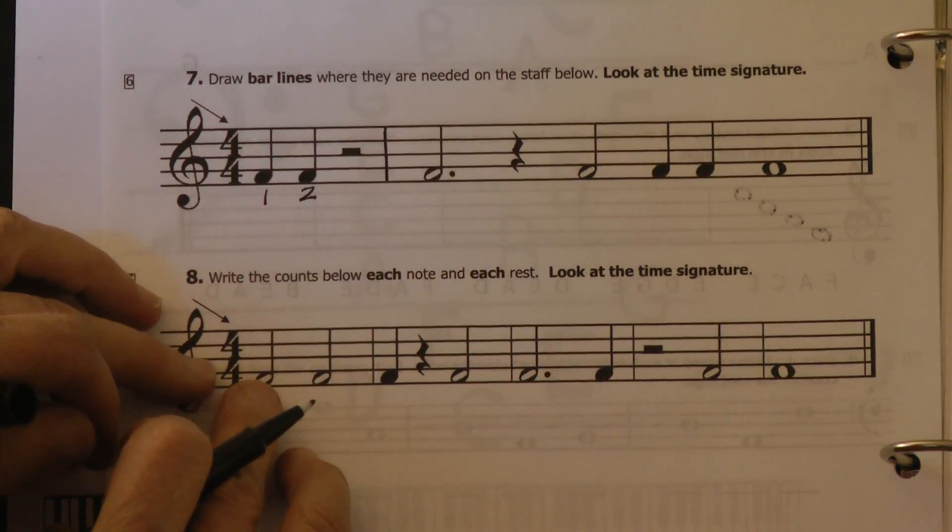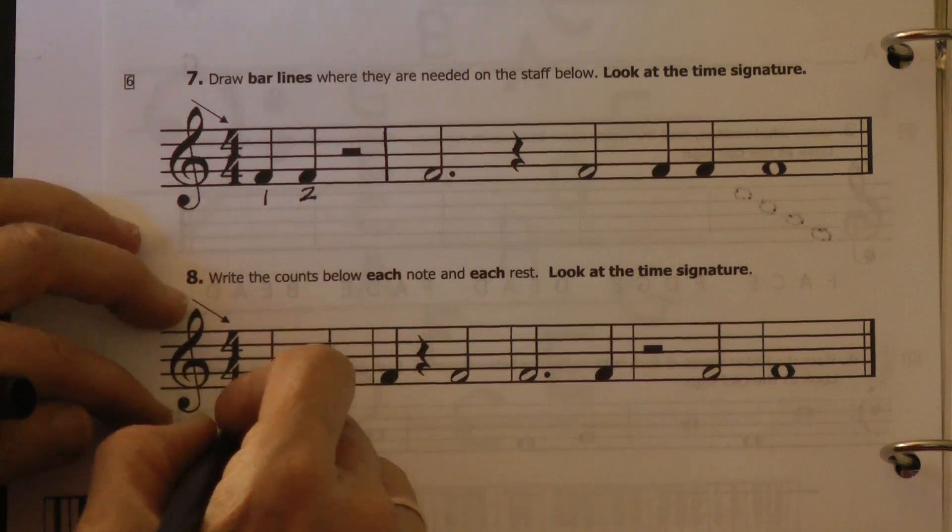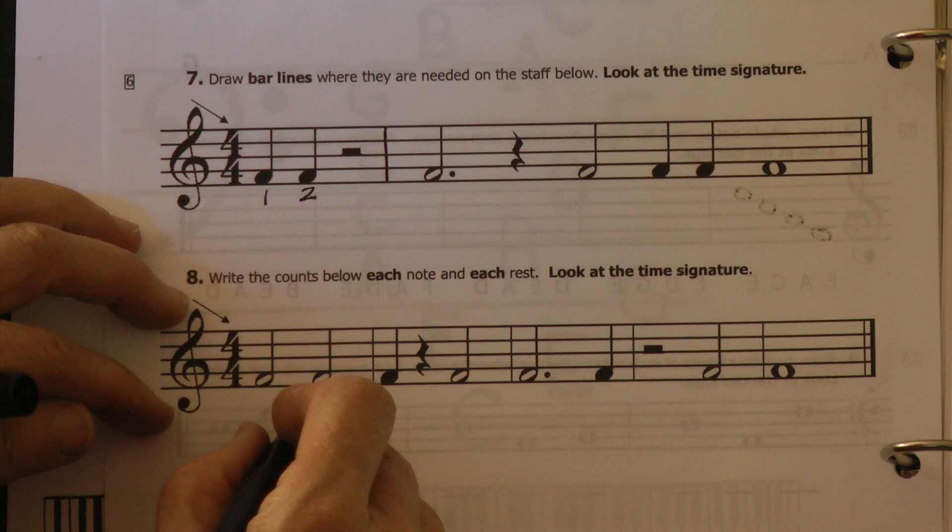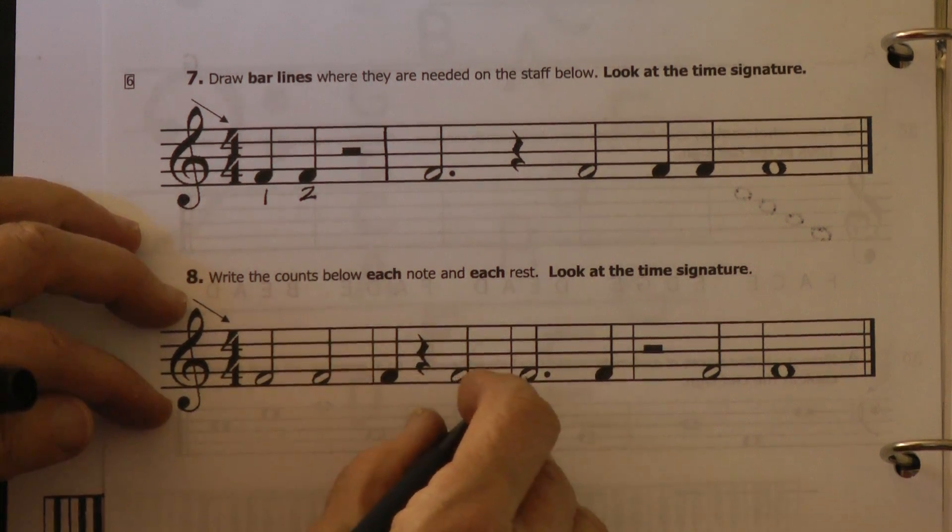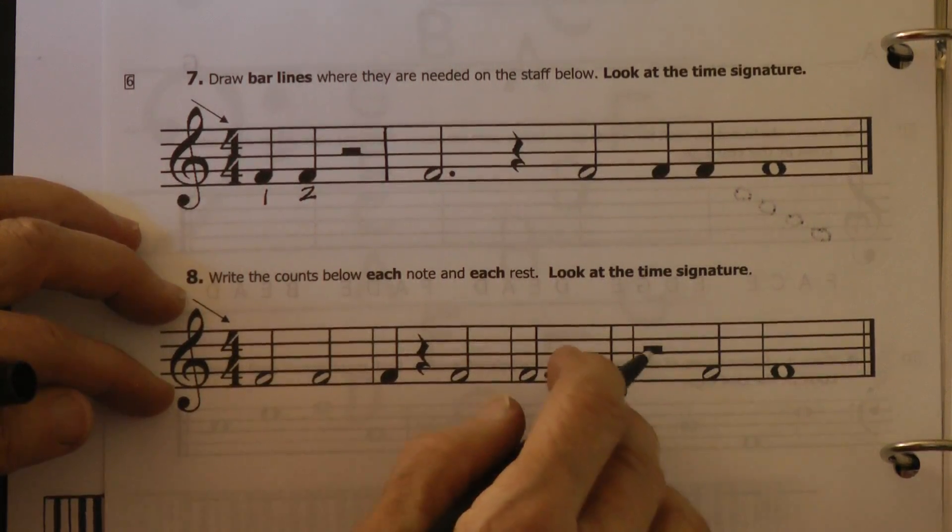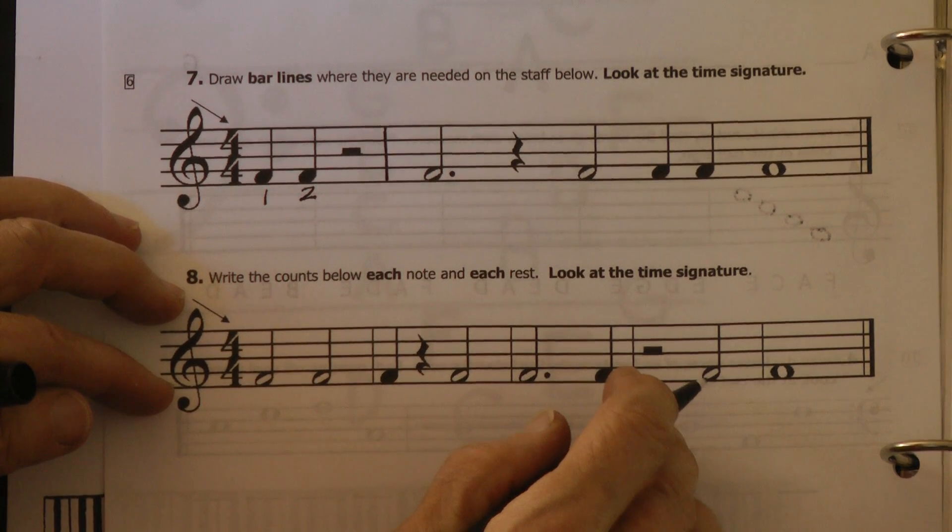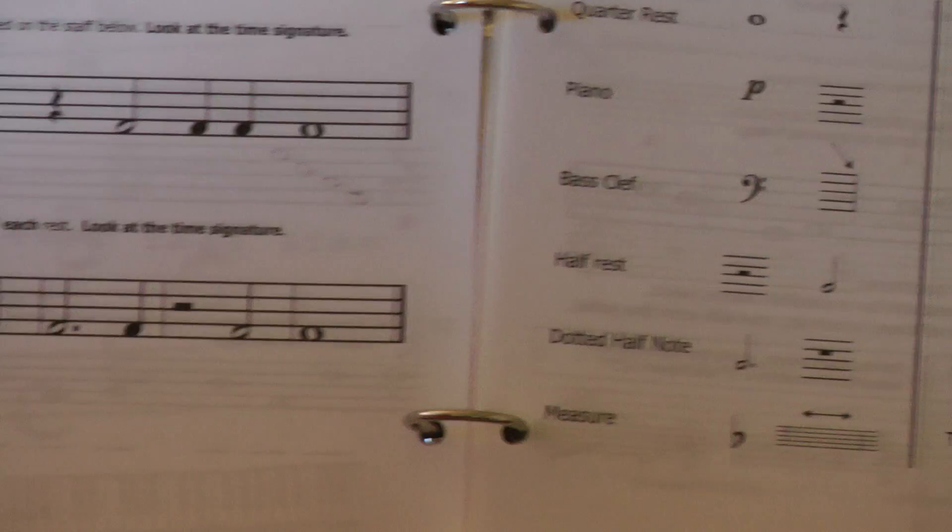Now here's where we're going to write the counts. So here's where you write one, two, and three, four. One, two, three, four. One, two, three. So be sure you put the three right under the dot. Four, one, two is a half rest. Three, four. One, two, three, four. All right, we'll go to the next page.